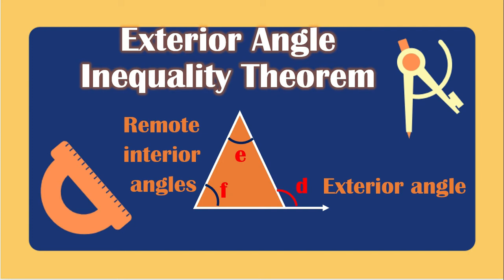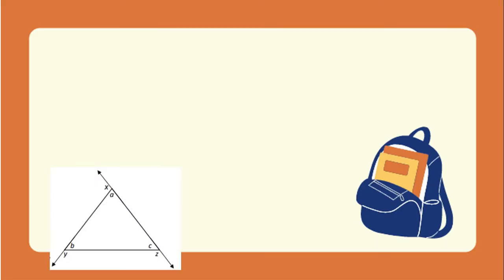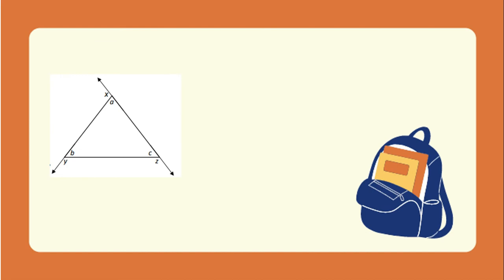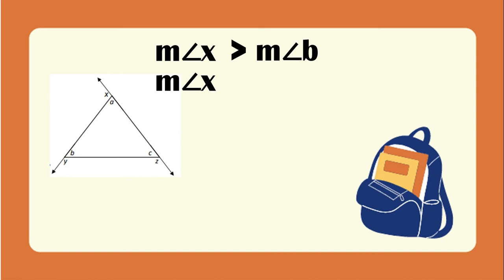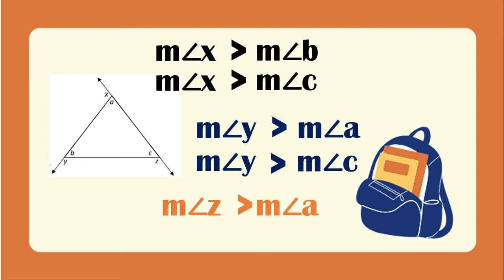In the exterior angle inequality theorem, the measurement of angle D should be greater than the measurement of angle E, or the measurement of angle D should be greater than the measurement of angle F. In this figure, the measurement of angle F should be greater than the measurement of angle B, and also greater than angle C. Angle Y is greater than angle A and also greater than angle C. And for exterior angle Z, the measurement of angle Z is greater than angle A, and also greater than angle B.